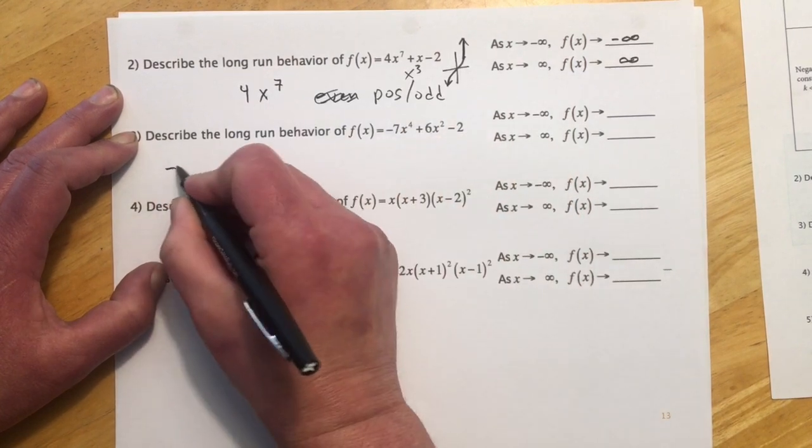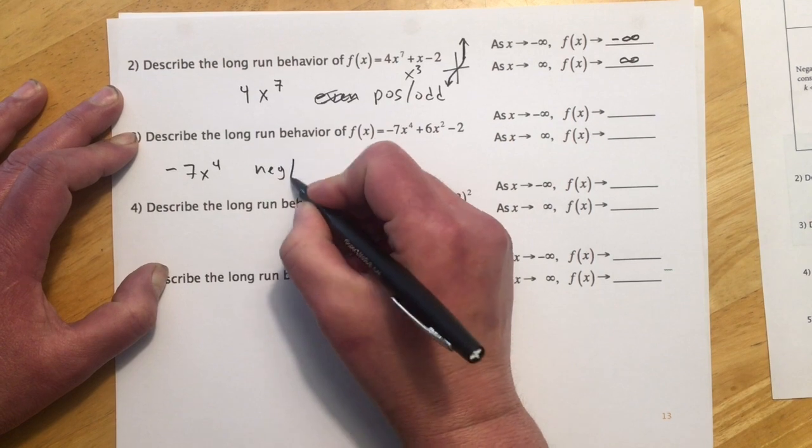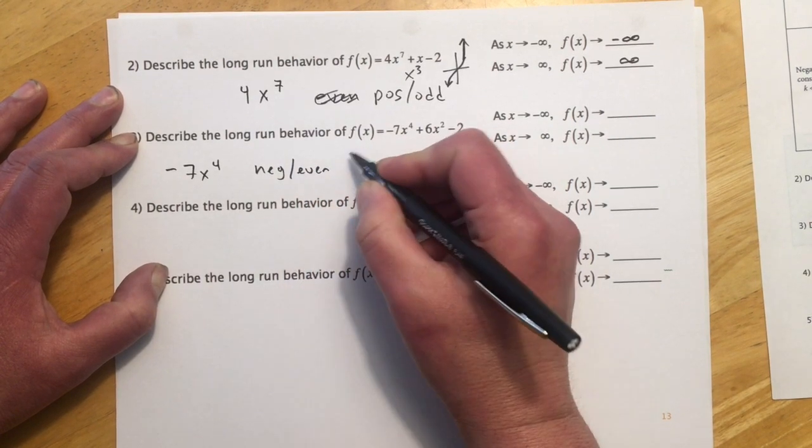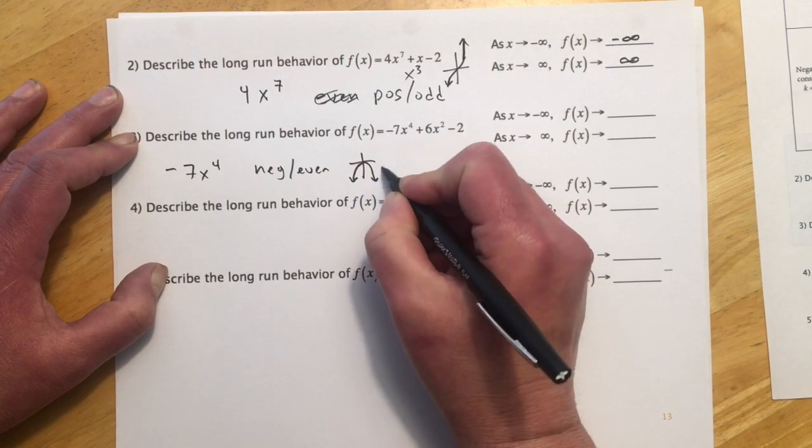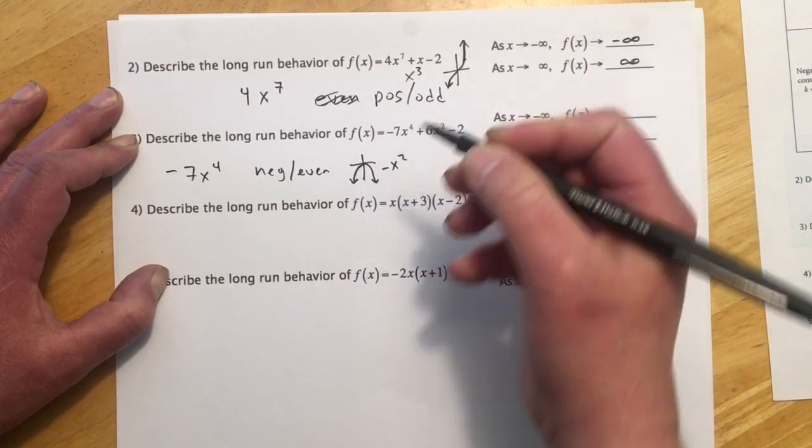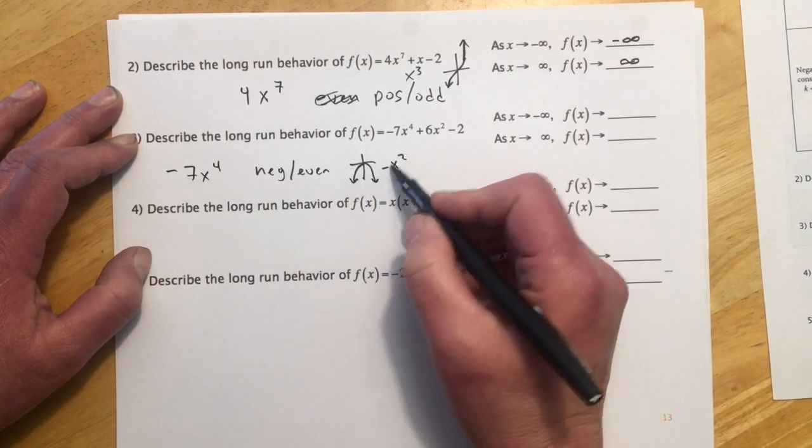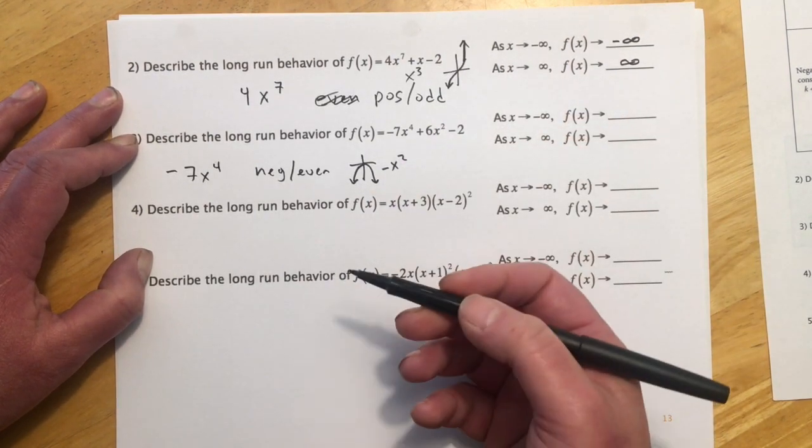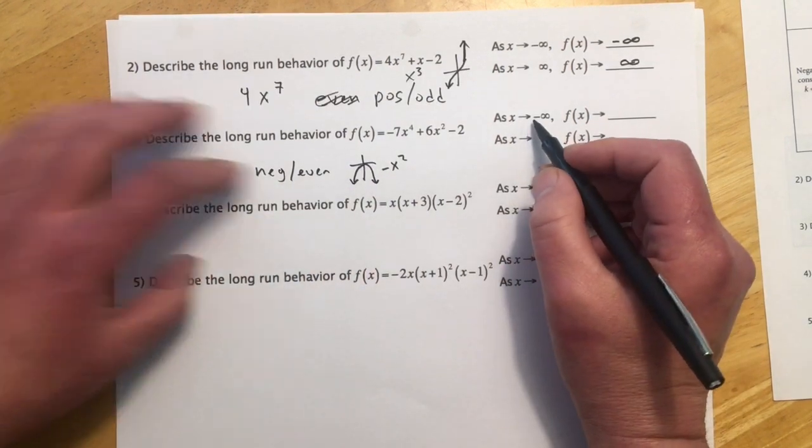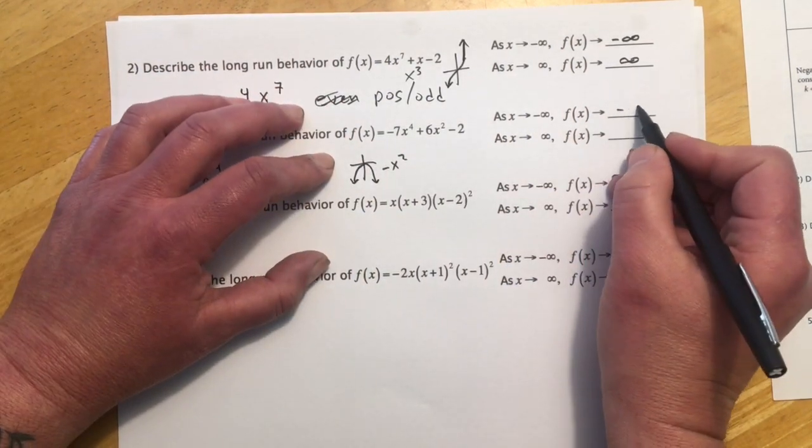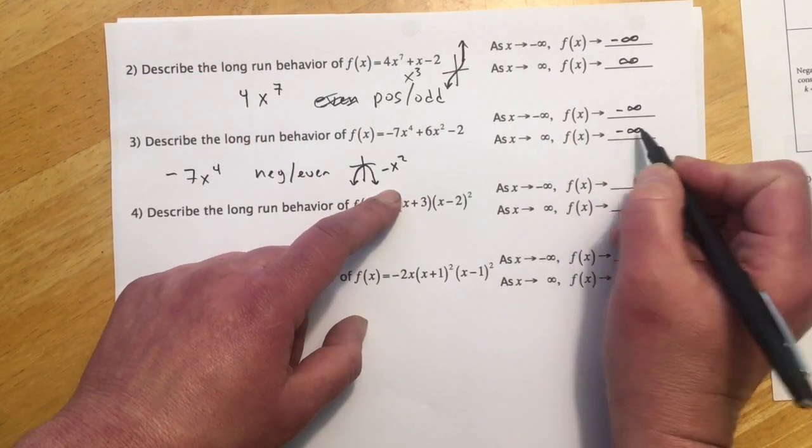For this one, it's negative 7x to the fourth, which is negative even. And negative even things are going to look like negative x squared. And so notice I'm not memorizing the table, I'm just remembering what the four basic pictures look like and using that to establish what the more complicated ones will look like. So as x goes to negative infinity, y goes to negative infinity. Likewise, as x goes to positive infinity, y goes to negative infinity.